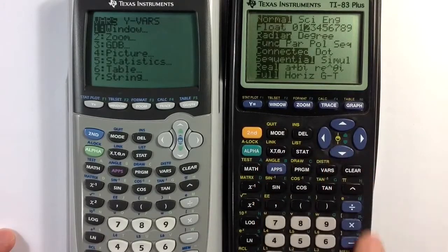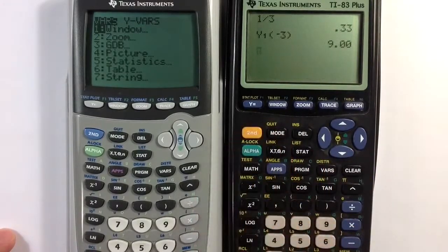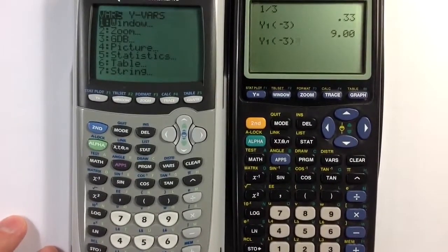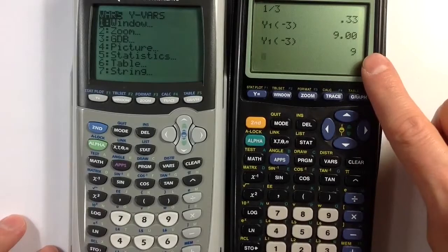Let me change back to float and we'll see, using the entry command to bring that back again, we'll see that in float mode we just see that whole number nine.